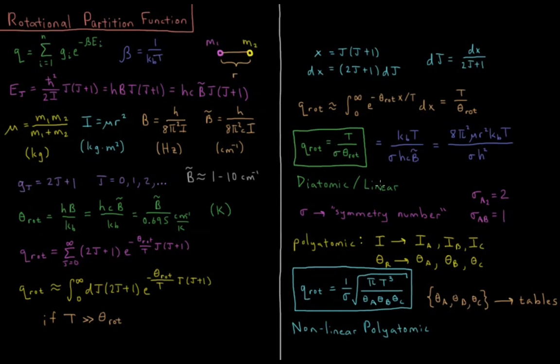For a general diatomic or linear molecule, we have the rotational partition function, if the temperature is much greater than the rotational temperature, equal to t over sigma theta rote. If we substitute in theta rote as hb over k, that's kt over sigma hc b-bar. If we substitute b-bar as h over 8 pi squared c mu r squared, the value is 8 pi squared mu r squared kt over sigma h squared, which is why it's much easier to express it as t over sigma theta rote.